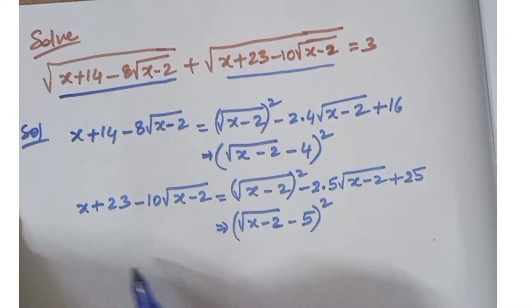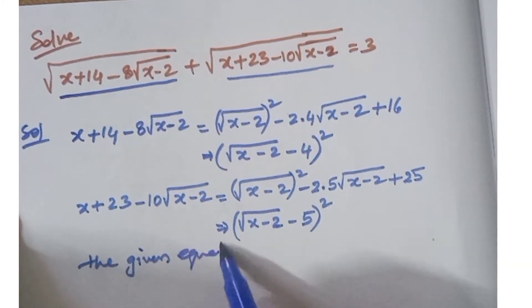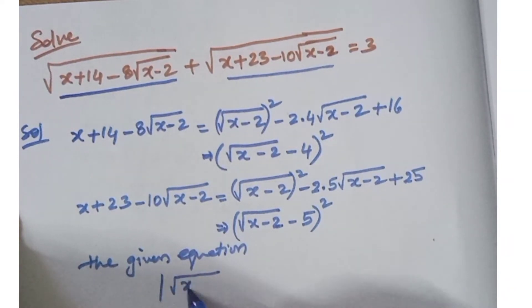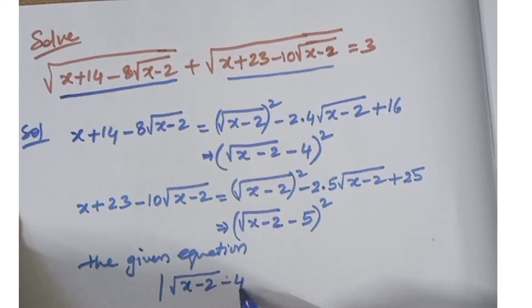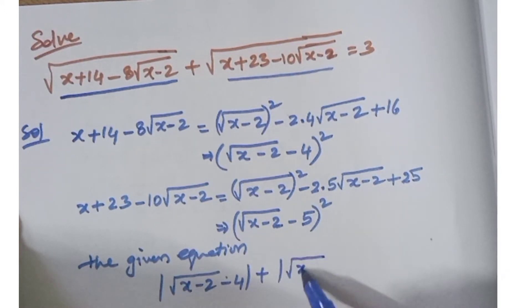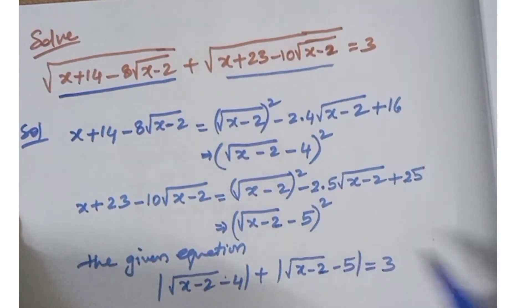Substituting back into the given equation, it becomes: modulus of root of x minus 2 minus 4, plus modulus of root of x minus 2 minus 5, is equal to 3.